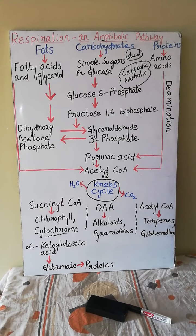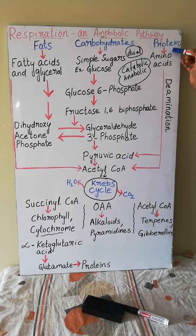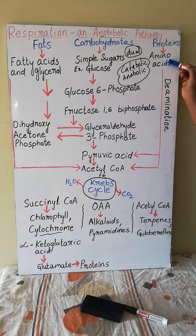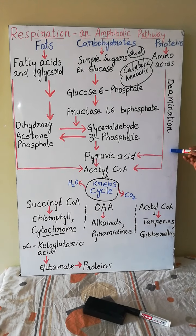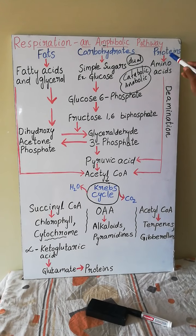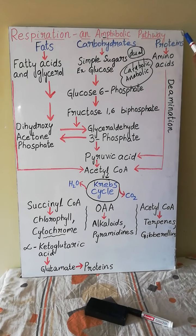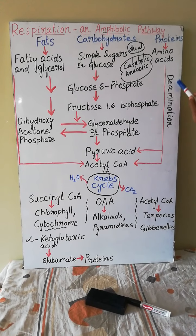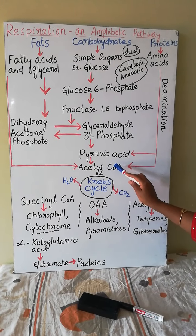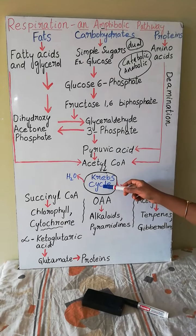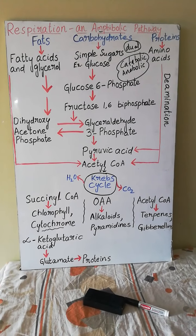Coming to proteins: proteins in the presence of enzyme proteases break down into amino acids — the building blocks of proteins. The amino acids further by deamination process convert mainly into pyruvic acid and even into acetyl-CoA, which again enters the Krebs cycle pathway and continues oxidation. This is the catabolic pathway we have been discussing.